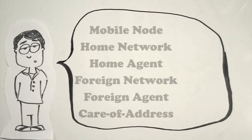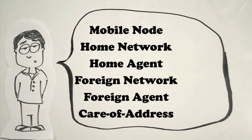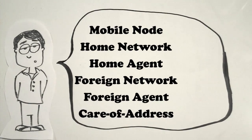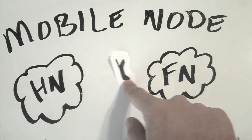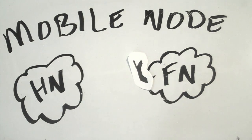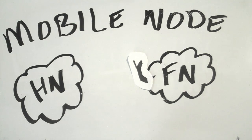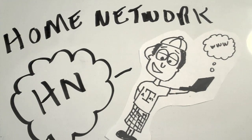It is necessary to be familiar with a few terminologies before understanding the working of mobile IP. The mobile node corresponds to the node which moves from the home network to the foreign network. This node is assigned a permanent IP address to which the packets are always sent. The packets sent from other nodes to the mobile node will always be destined to its home IP address.